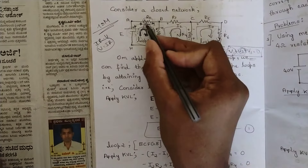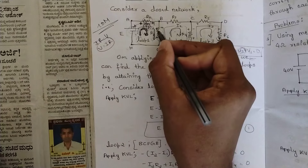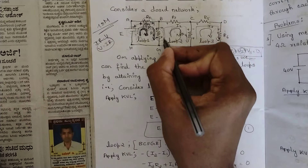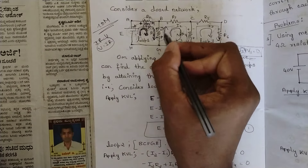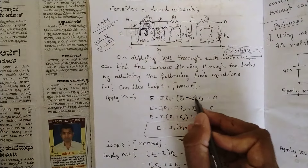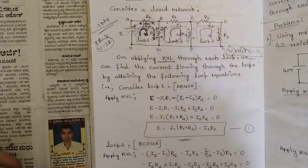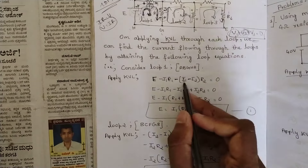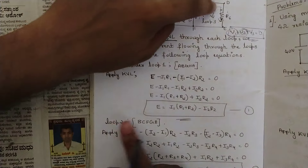Why do we write I1 minus I2 for R2? Because this resistor is between both loops, and for loop 1 the outward sign is minus, while for loop 2 the direction is opposite so the sign there is also minus. Whenever we have a resistance between two loops, we should consider both loop currents. Then we expand the brackets, multiply the terms, and solve to get one equation — name it equation 1. Similarly, do the same for loop 2 and loop 3.